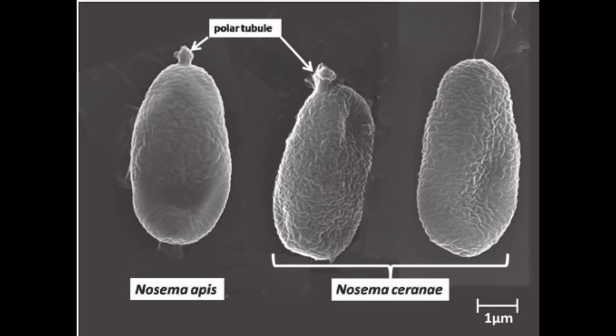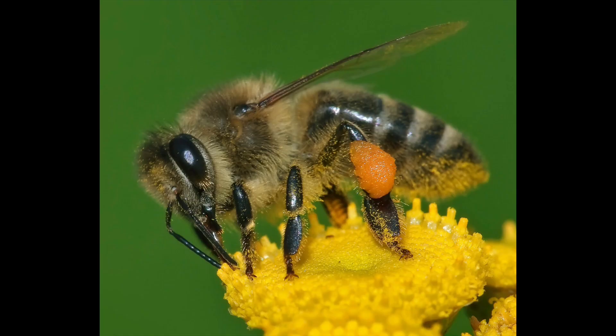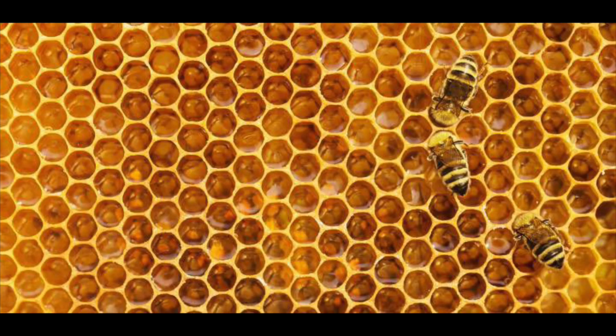A new variant, Nosema ceranae, discovered as a parasite of Apis cerana in the 1990s, was first identified on the western honeybee, Apis mellifera, in Spain in 2004, and has been associated with colony collapse disorder in the USA and bee death in Europe.